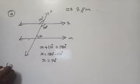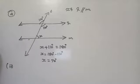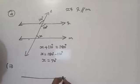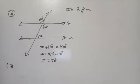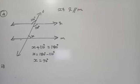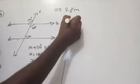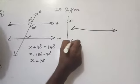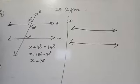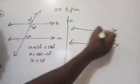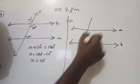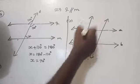Let us move to the next question. The lines A and B are parallel, and L and M are also parallel. These two lines are parallel, and these two lines are also parallel. You can name them as lines A and B, and another line L and M, which is also parallel.